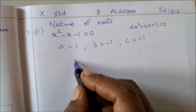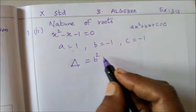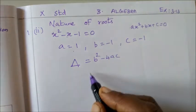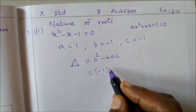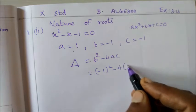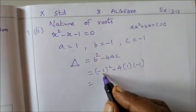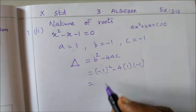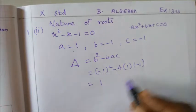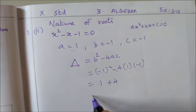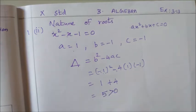So to find nature of roots, delta equals b² - 4ac. So equals (-1)² minus 4 × 1 × (-1). Minus 1 square is 1. Minus into minus plus 4, equals 5. 5 is greater than 0.